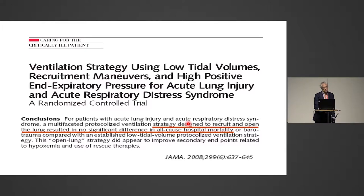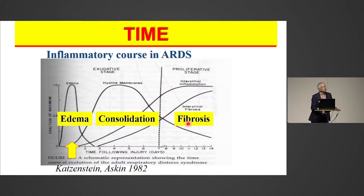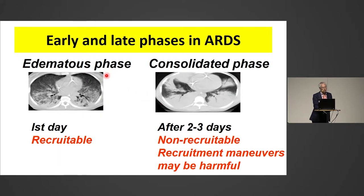What is that about? I come to the fourth fundamental: time. The inflammatory course in ARDS is like all other inflammation — it starts with edema, then consolidation, then fibrosis. Consolidation and fibrosis start quite early. So you can recruit the lung early, but you cannot do it later. The first day it's possible; after that it's not recruitable, and recruitment maneuvers are harmful. When you combine early and late patients together, of course you get neutral results in a study.